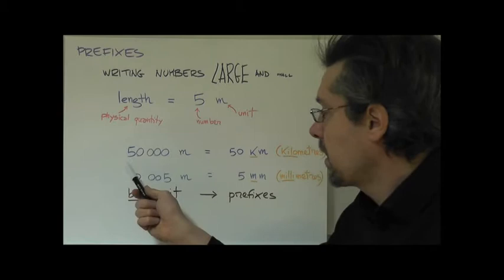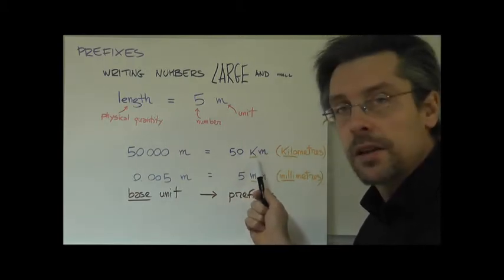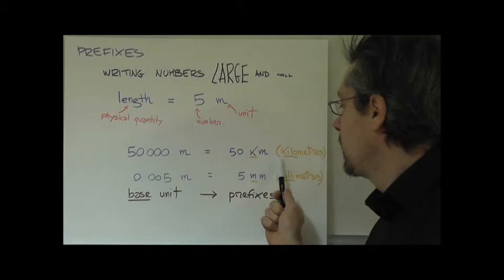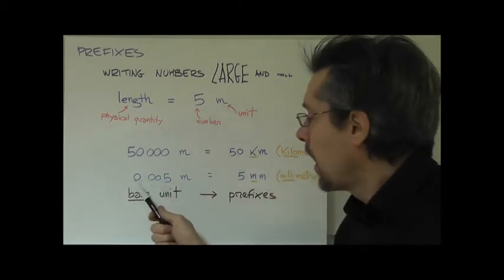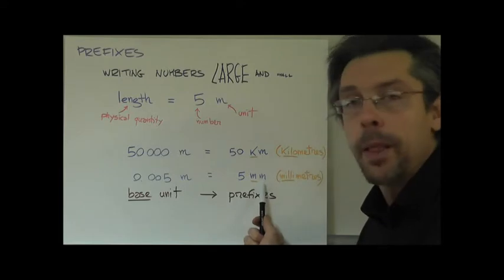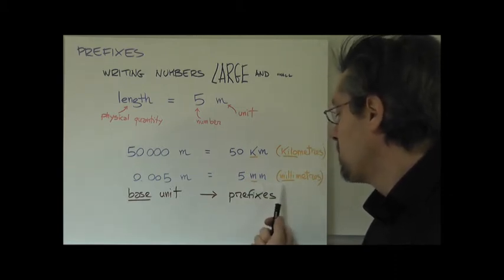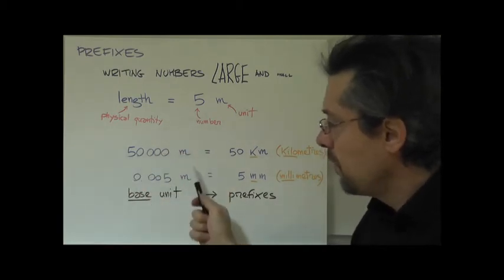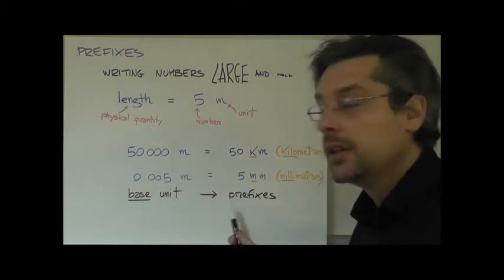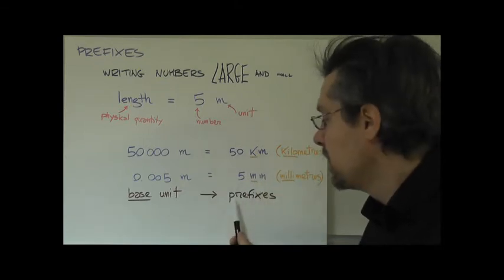Now as you can see here I rewrote the same number 50,000 meters as 50 km where this symbol K stands for kilo. So we write this and we read this as 50 kilometers. In the same way I rewrote this number 0.005 meters as 5 mm where the first M doesn't stand for meter, it stands for milli. So together it reads as millimeters. So we can see that the same numbers written using the base unit of length, the meter, can be rewritten in a much shorter way by using these small symbols in front of the base unit. And this small symbol is called a prefix.